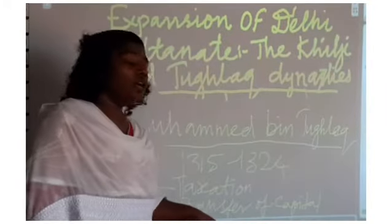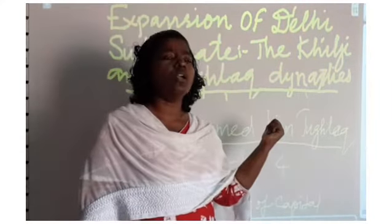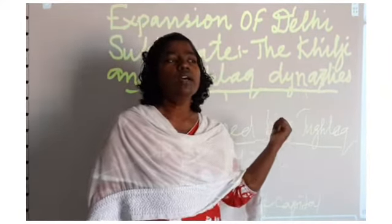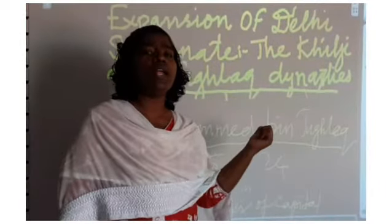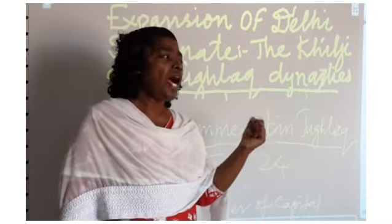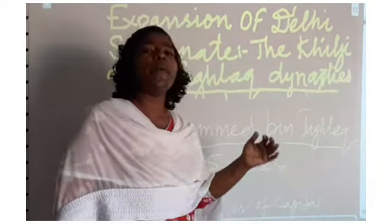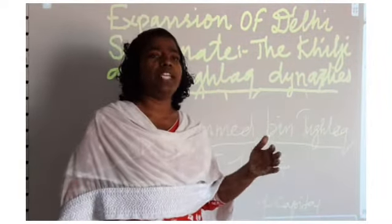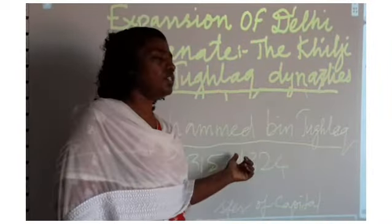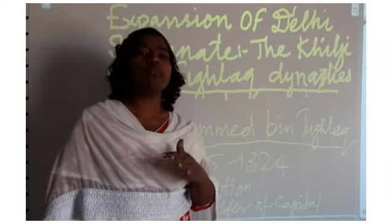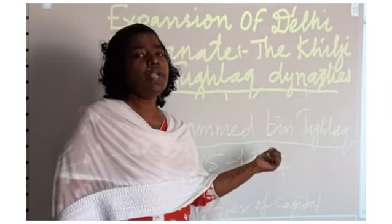The next policy is the foreign policy. His motive was to become the world leader and conquer the whole world. In order to do so he required a large number of soldiers, and he paid one year's salary to the soldiers in advance. Because of this the treasury became empty. There was no money to maintain his standing army or the government. That's why he is considered the foolish Tughluq.